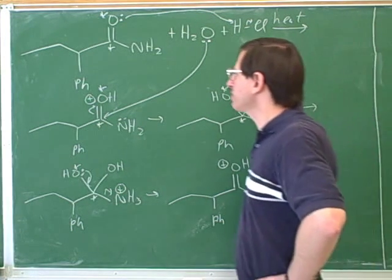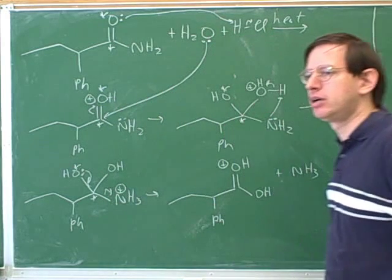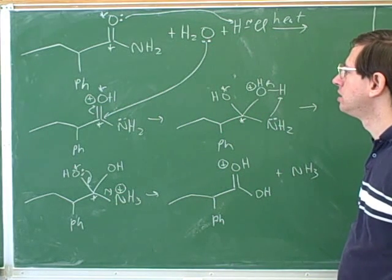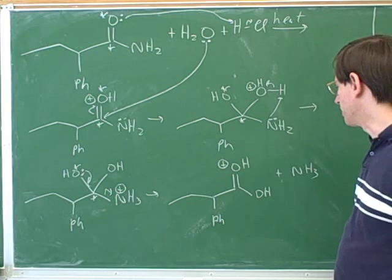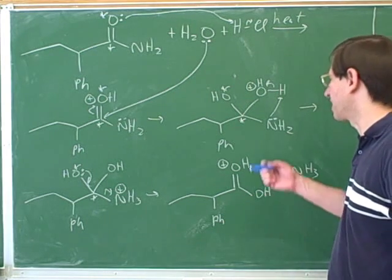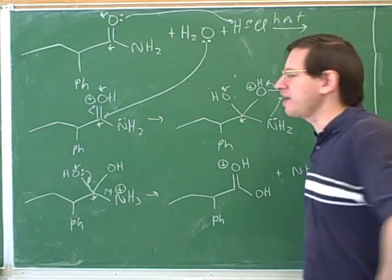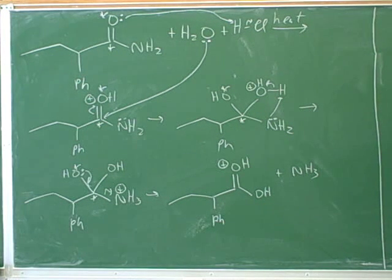What type of functional group did we start with here? An amide? Yeah, an amide. And what type of functional group is this? We got a carboxylic acid. Good. What's the name of this general type of reaction? Hydrolysis. Yeah, this would be an amide hydrolysis.